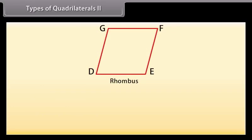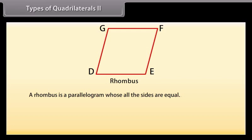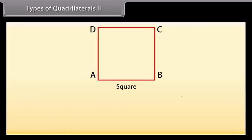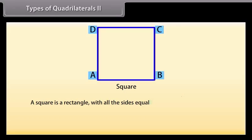Next is a parallelogram whose all sides are equal — this is a rhombus. Here, sides DE, EF, FG, and GD are equal in length. So DEFG is a rhombus. Now look at this figure — this is a square. A square is a rectangle with all sides equal. ABCD is a square.